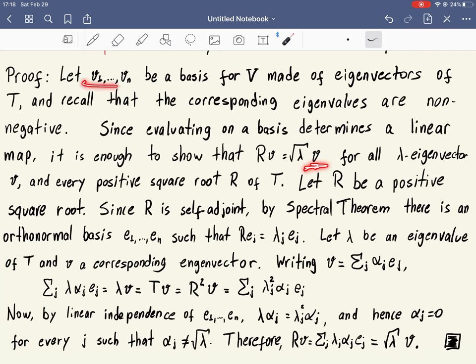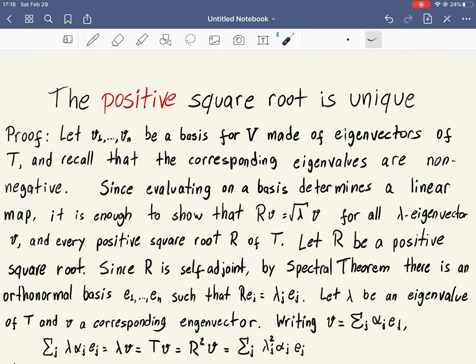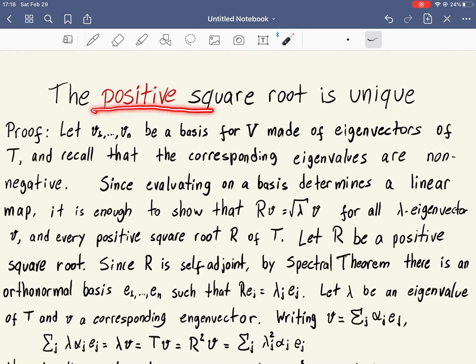Since there is a basis of eigenvectors, this completely determines what R is. There cannot be a different R that satisfies the property of being a positive square root.